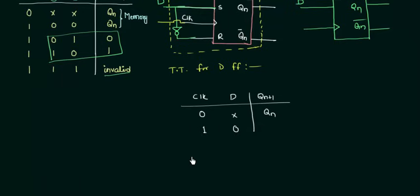When clock is high and D is low, it means what? S is 0 and R is 1 and for this particular case I am having QN plus 1 as 0. So this is 0. Now when clock is high and D is 1, I will have my S as 1 and R equal to 0. It means this case and I am having QN plus 1 as 1.